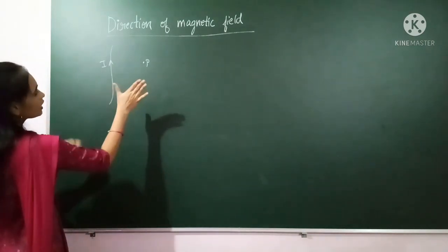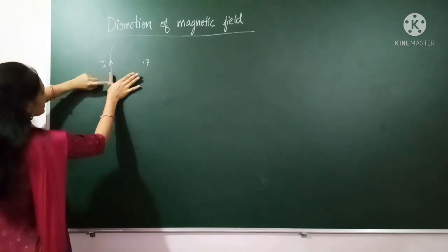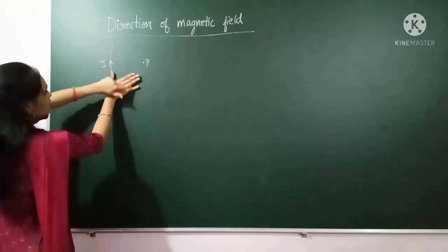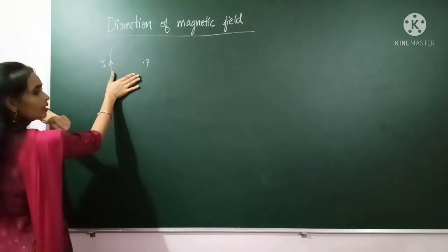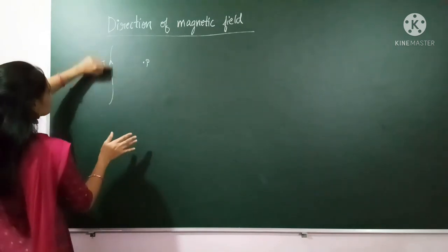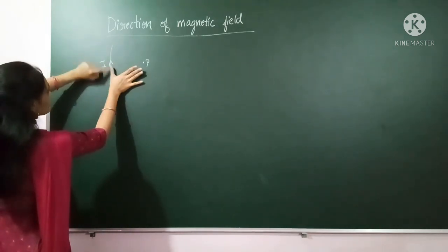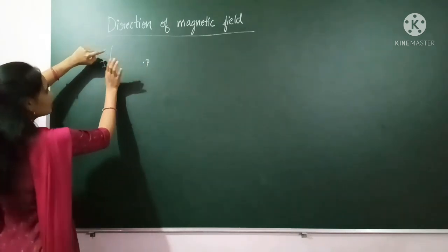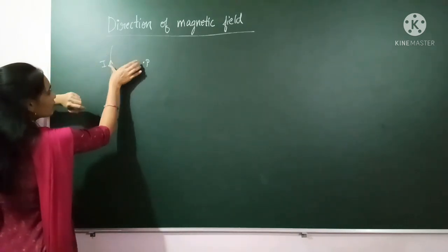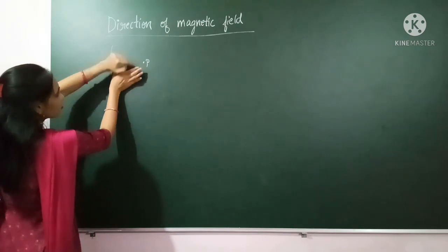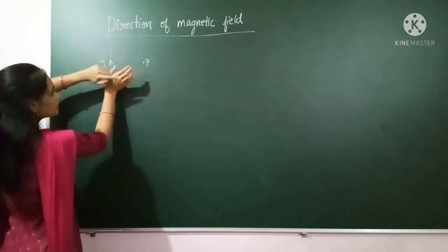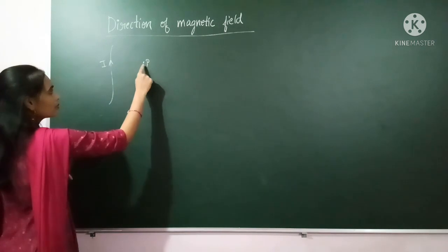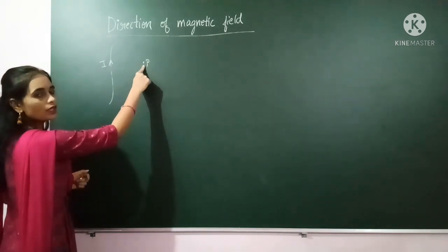For the right-hand palm rule, we take our right hand, place the thumb in the direction of the current, and curl the fingers. The fingers will show the direction of the magnetic field. So here, with the thumb pointing in the direction of current, when I curl the fingers, if the fingers are curling inward, then the magnetic field is inward at point P.